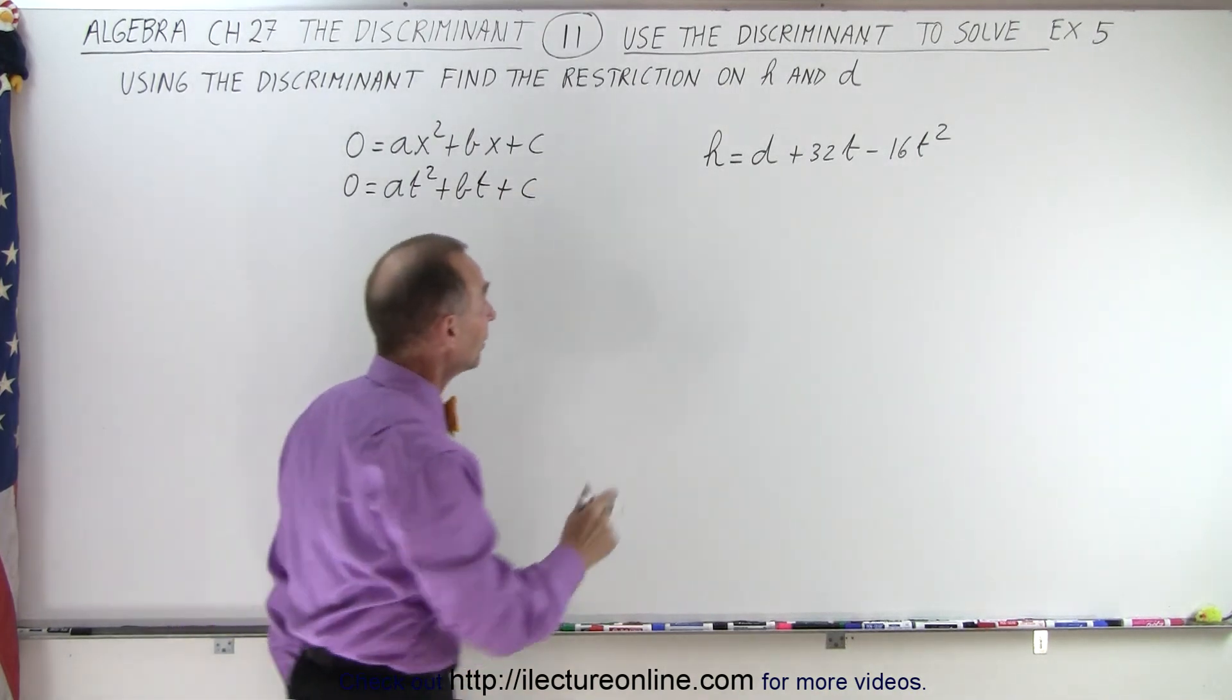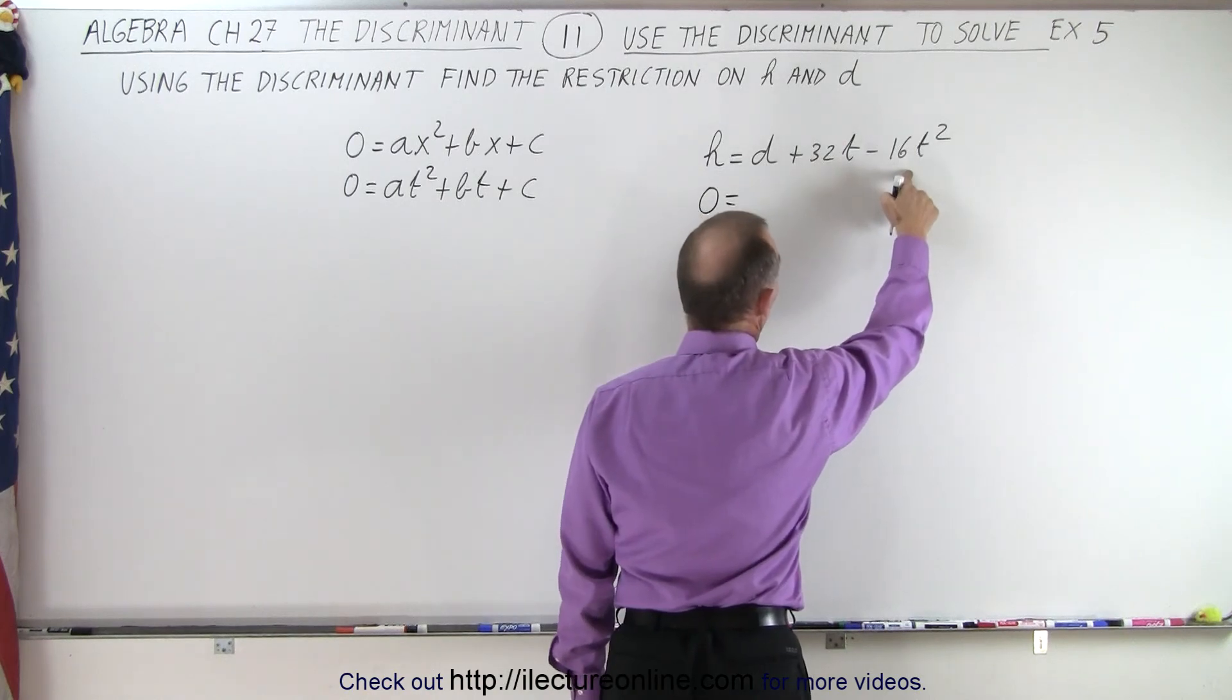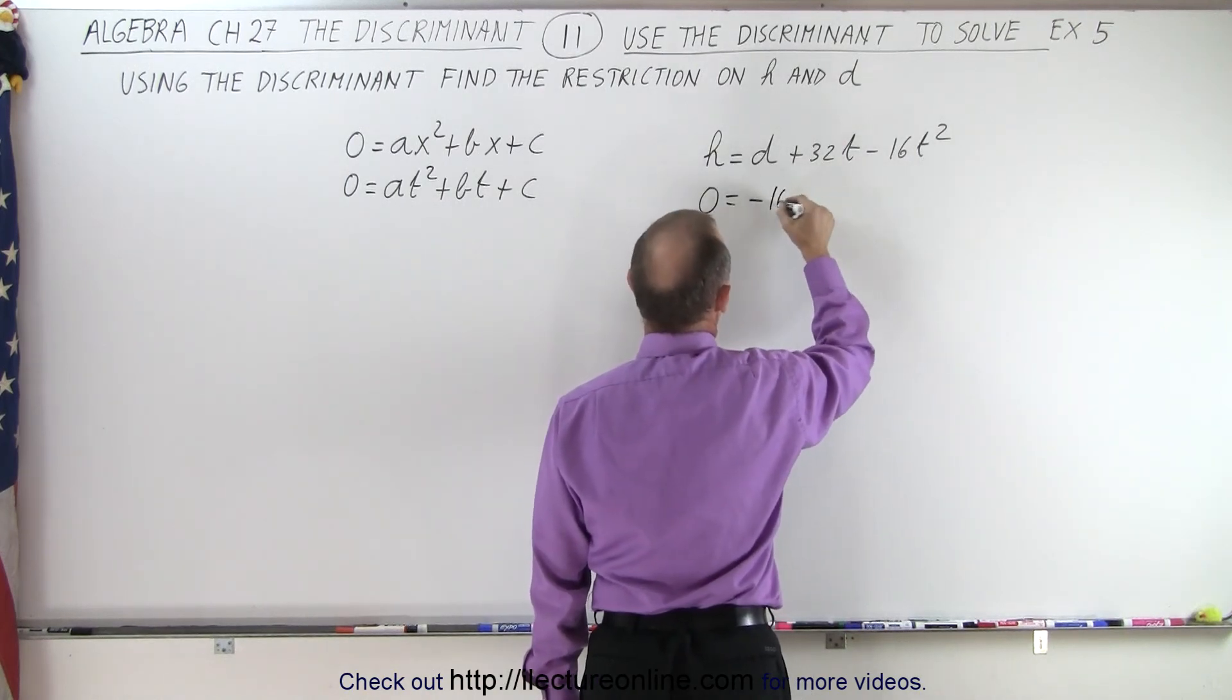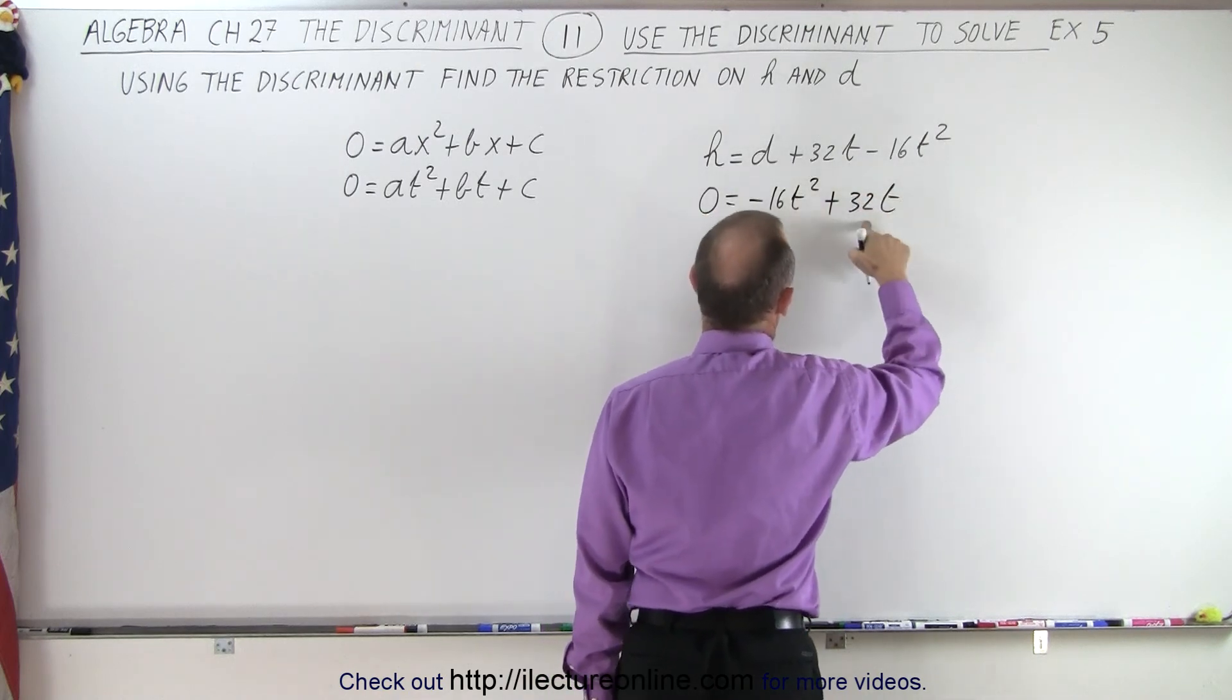So we're going to do the same thing here. We'll write 0 is equal to the second order term first, minus 16t squared plus 32t. That's the first order term.